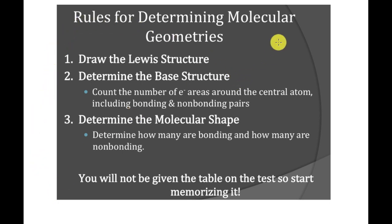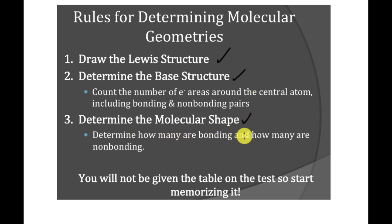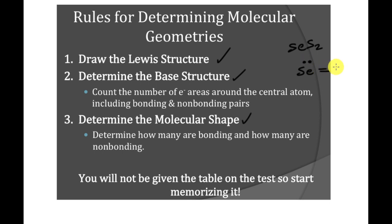Here are the rules for determining molecular geometries. Step one: write the Lewis structure. Step two: determine the base structure — count the number of areas of electrons around the central atom, including bonding and non-bonding pairs. Step three: determine the molecular shape by figuring out how many of those areas are bonding and how many are non-bonding. For example, let's say I have SO2: the Lewis structure has a lone pair of electrons, a double bond on the sulfur, and a single bond.